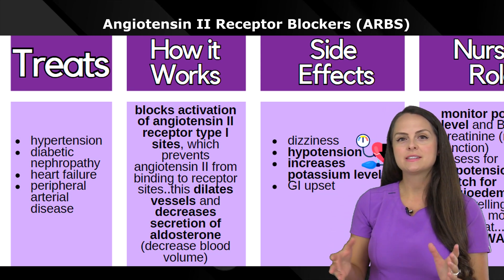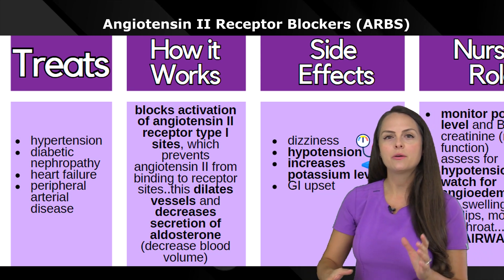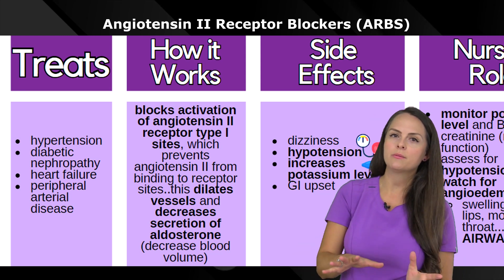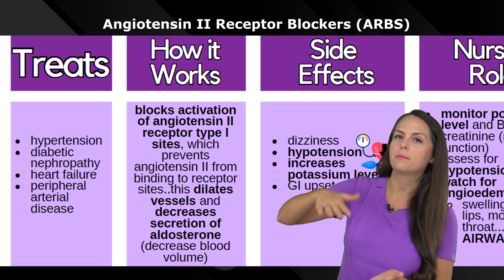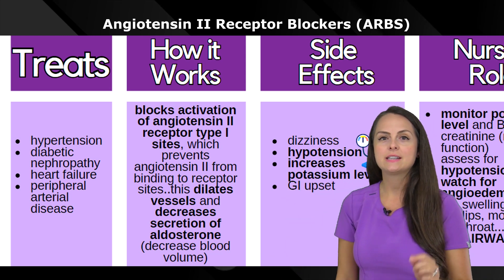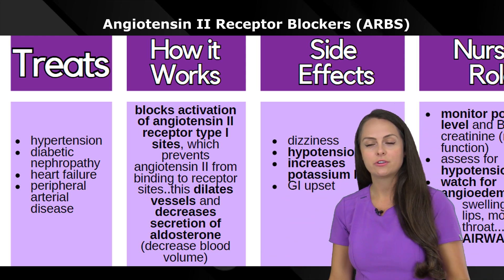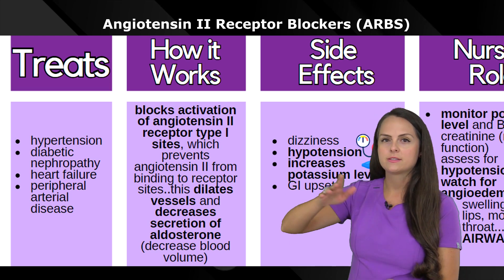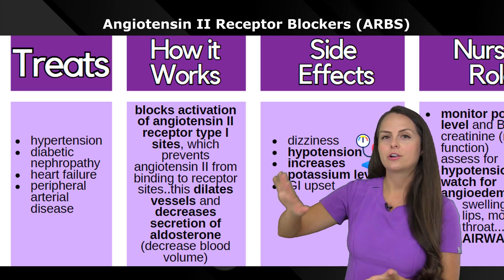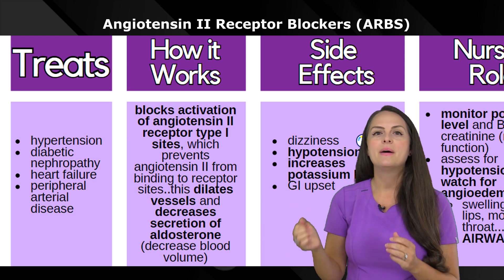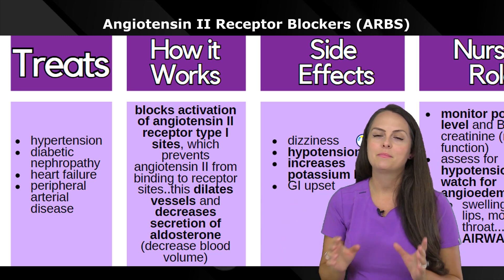Aldosterone is a substance that helps regulate your blood volume. It normally causes your body to retain water and sodium, which builds up blood volume, and to excrete potassium. But if we're decreasing aldosterone secretion, we're going to excrete extra water and sodium — helping decrease blood volume — but we're going to retain potassium.